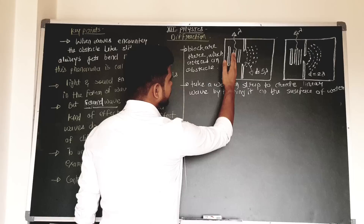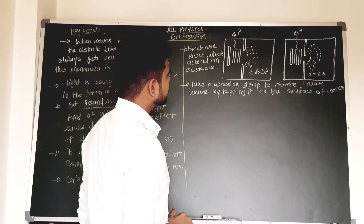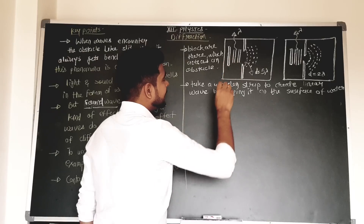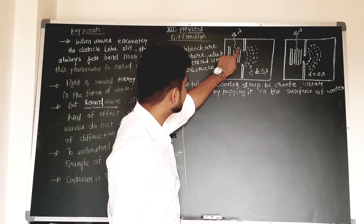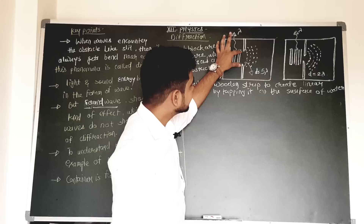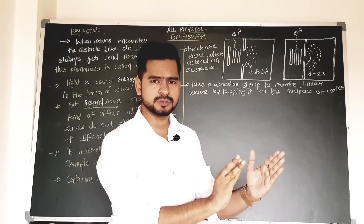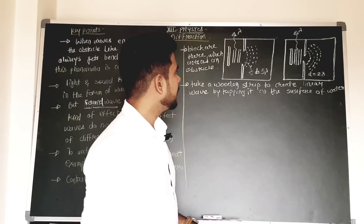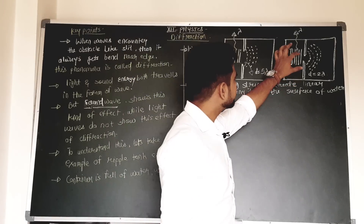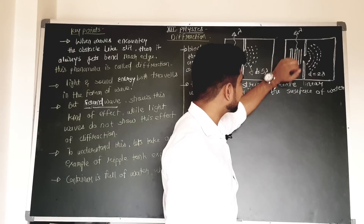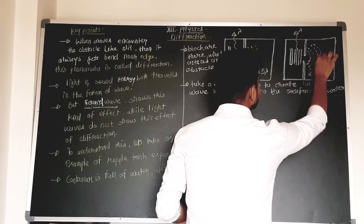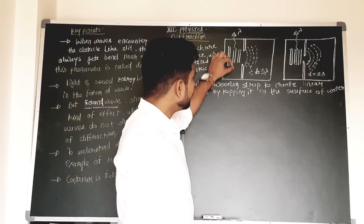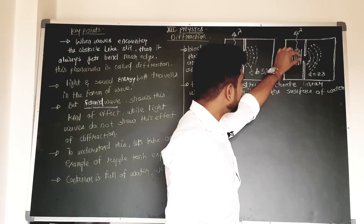When the wooden strip is tapped it produces linear waves. When the gap is large, the waves emerging from the slit remain almost linear — the diffraction is very less. But if we reduce the gap, we see more bending of the waves — more diffraction. From these two setups of the ripple tank experiment we can conclude: when the gap is more, diffraction is less; when the gap is smaller, diffraction is more.